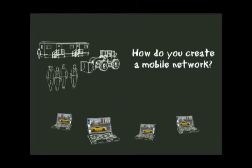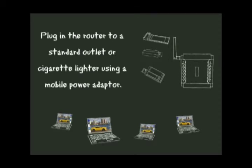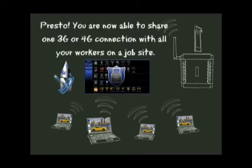How do you create a mobile network? Find a location in your vehicle or in an enclosed area where you can set up the 3G-4G router. Plug in the router to a standard outlet or cigarette lighter using a mobile power adapter. Insert the 3G-4G card into the Nexera router and use the router wizard to configure the router settings. Presto — you are now able to share one 3G-4G connection with all of your workers on the job site.